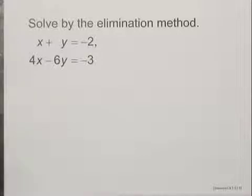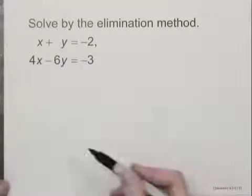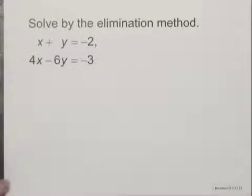Now I can't add directly to eliminate a variable, so I'm going to have to multiply one or both of these equations by something before I can do that. I can see that the signs of the y terms are different, so I'm going to try to eliminate the y term.